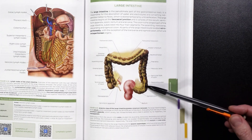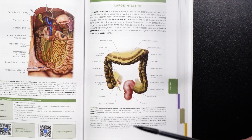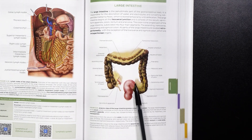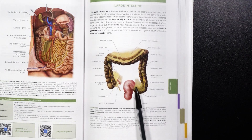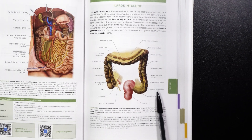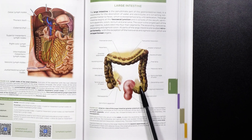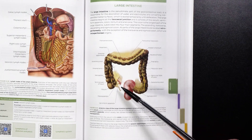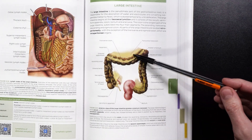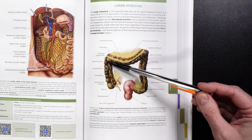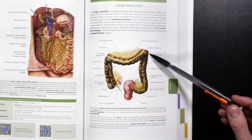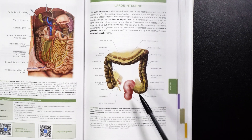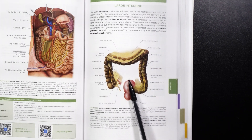Then we go from the descending colon to the sigmoid colon. The sigmoid colon is often described as an S-shaped curve of the large intestine, and we can see connective tissue anchoring it to the body wall — the sigmoid mesocolon. At this point, this is where you're starting to become aware of the fact that you have feces. This is all happening without your real awareness up until now, and you might feel a few contractions, but it shouldn't be anything significant — if it is, that's cramping.